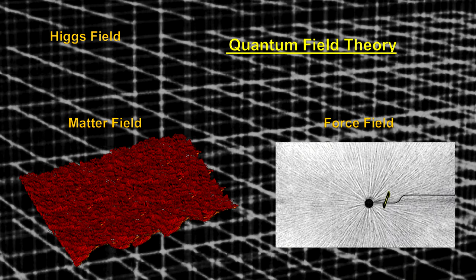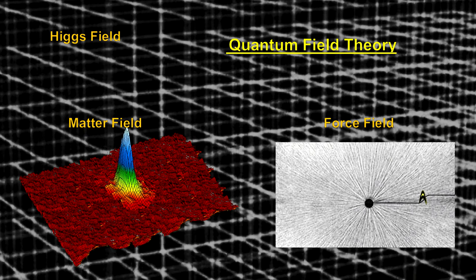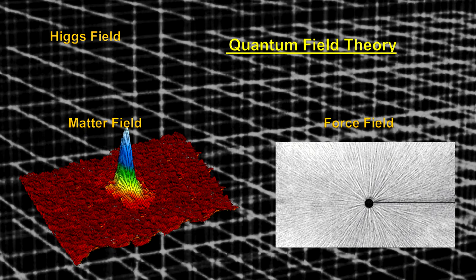In the How Small Is It video book chapter on the Higgs boson, we covered how so-called empty space is actually filled with matter and energy fields.